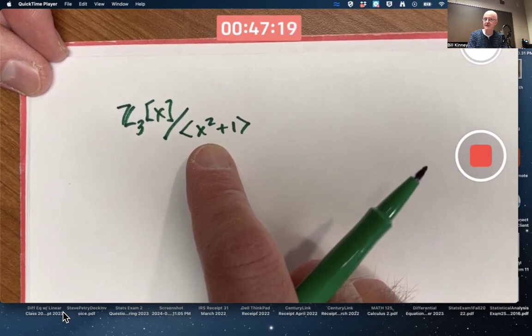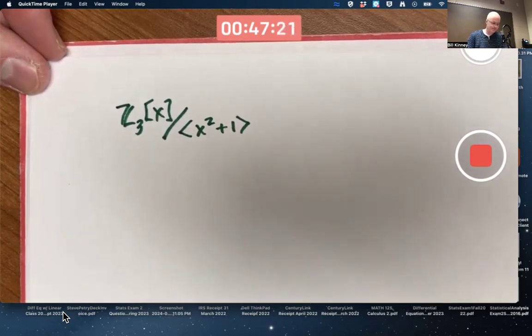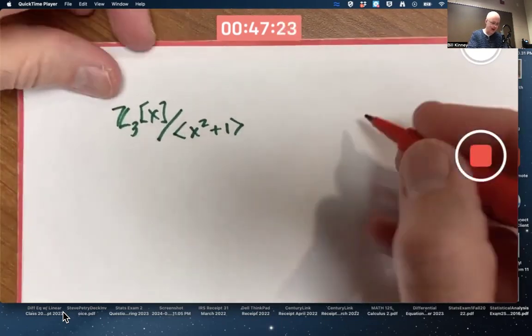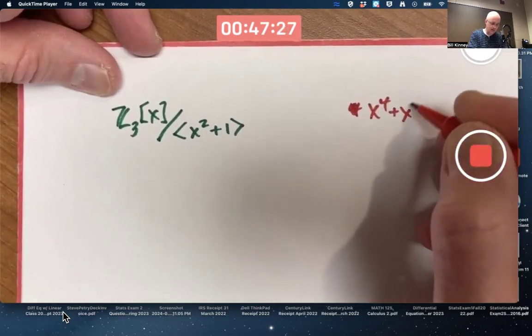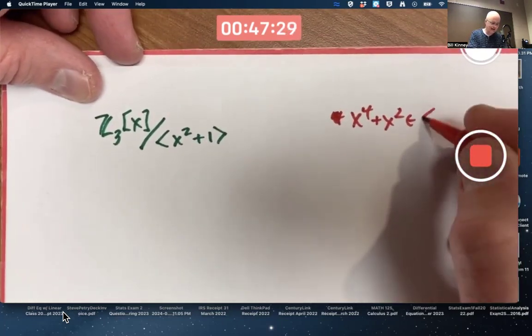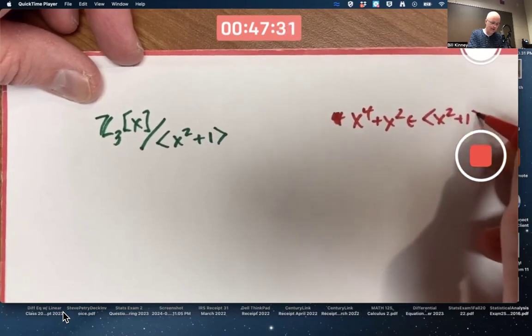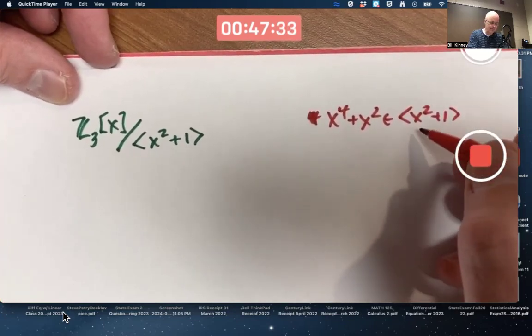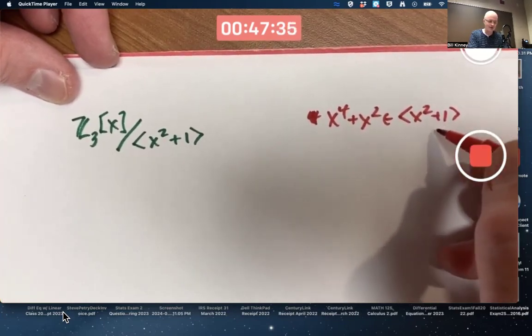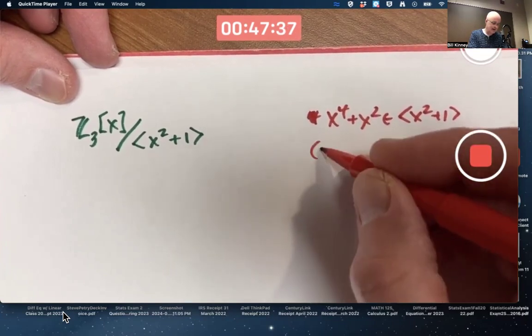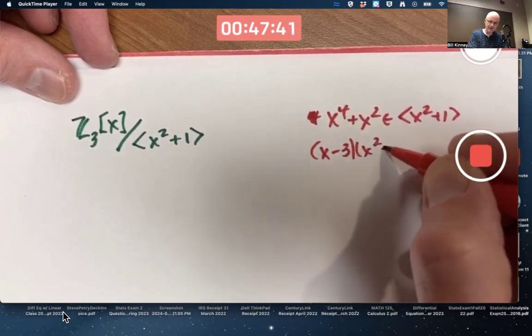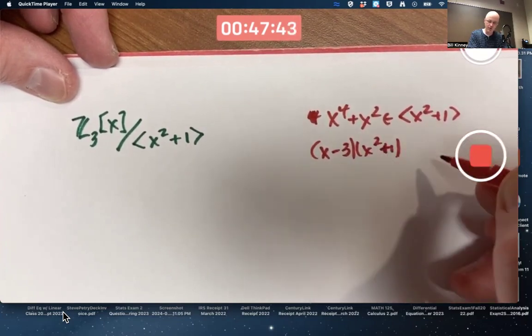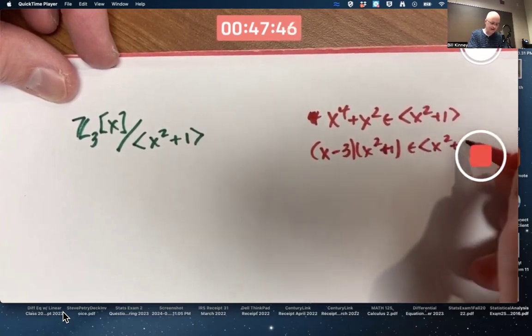It's what this notation represents. For example, x to the fourth plus x squared would be an element of that. Why? Because it's x squared times that polynomial. Another example would be, oh say, x minus 3 times x squared plus 1. In factored form, it's clear why that's an element of this ideal.